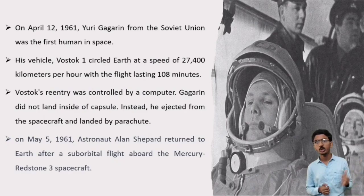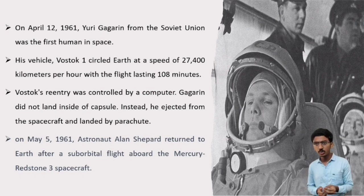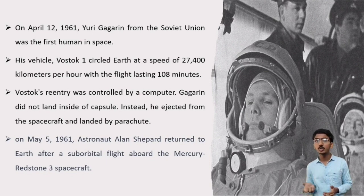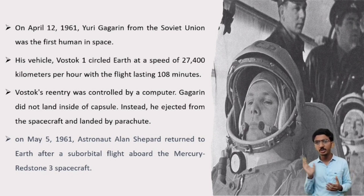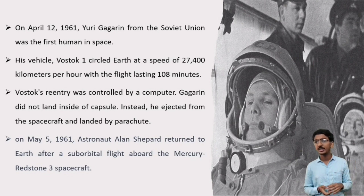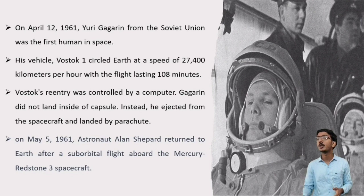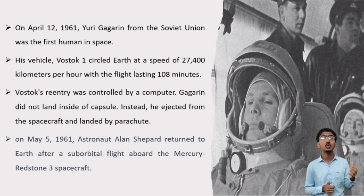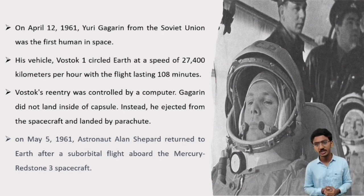The early programs ran concurrently from 1962 until 1964 with over 250 missions. In April 1961, Yuri Gagarin from the Soviet Union was the first human in space. His vehicle, Vostok 1, circled Earth at a speed of 27,400 km per hour with a flight lasting 108 minutes. Reentry was controlled by computer. Gagarin did not land inside the capsule; instead, he ejected from the spacecraft and landed by parachute. On May 5, 1961, Astronaut Alan Shepard returned to Earth after a suborbital flight aboard the Mercury-Redstone 3 spacecraft.